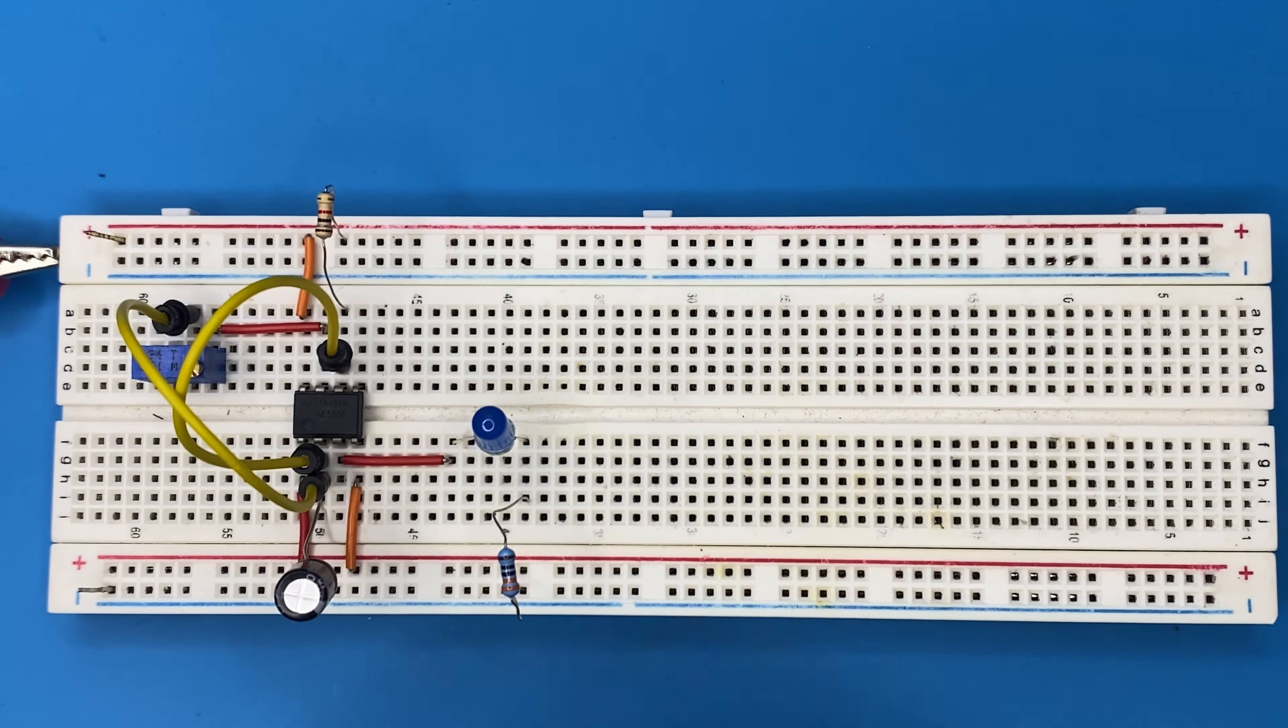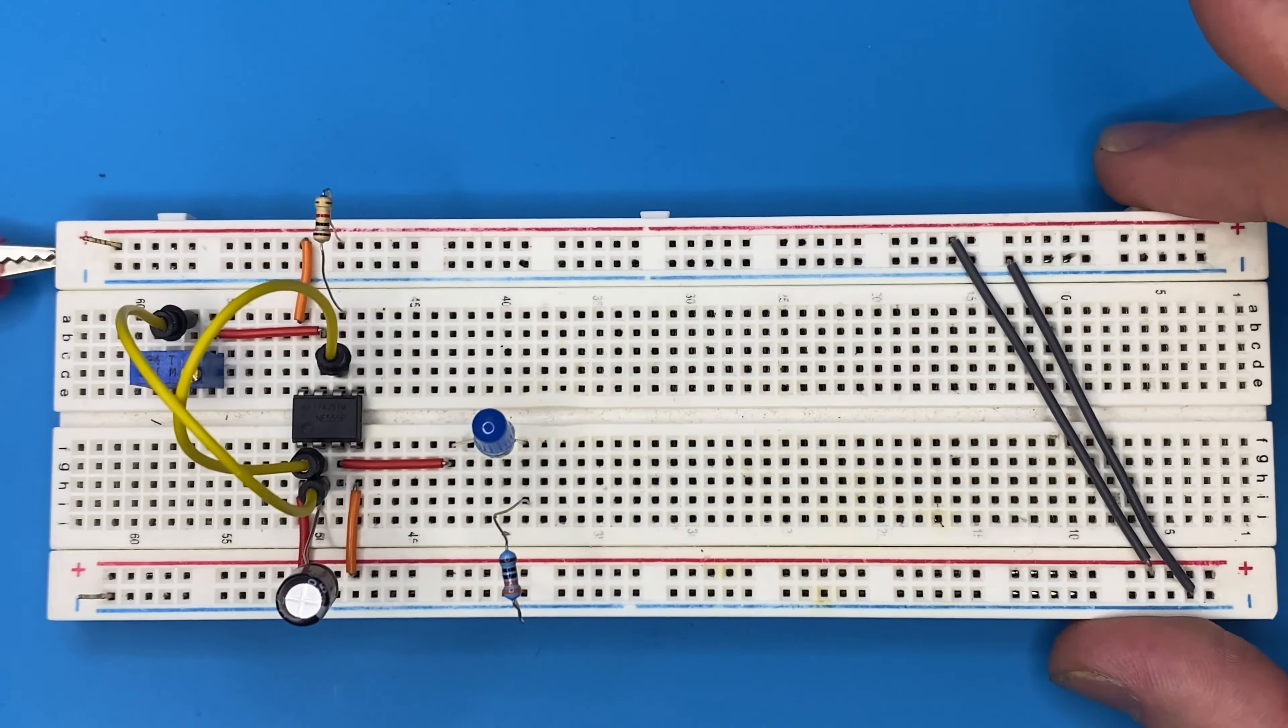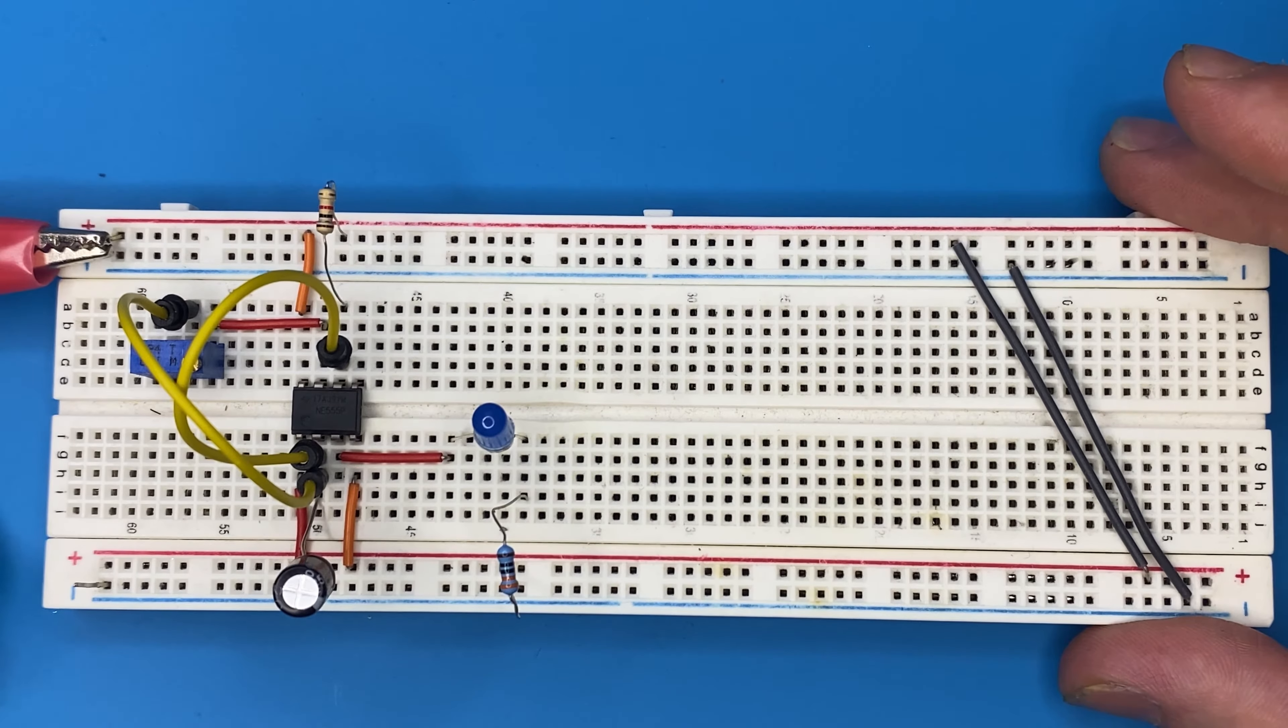Let's connect the rails of the breadboard to each other. So let's connect the power supply—I have 5 volts coming to the circuit.